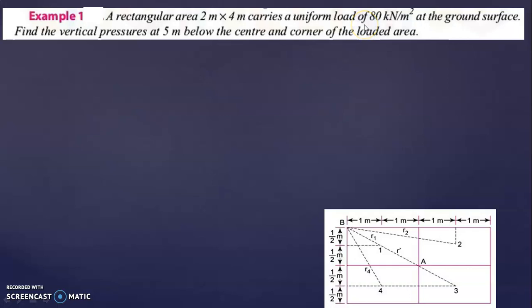Find the vertical pressures at 5 meter below the center and corner of the loaded area. Here it is asked to calculate the vertical stress at 5 meter below the center and also under the corner of the loaded area. So you can see here this is the given area like this — 2 meter by 4 meter.